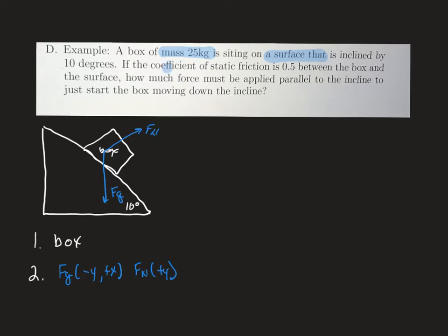We also have a coefficient of static friction, which is going to oppose the motion because we're trying to get the box to start moving down the ramp. So the force due to friction is going to be in the negative x direction. And we want to know what the applied force is — there is a force applied to push it down the ramp.